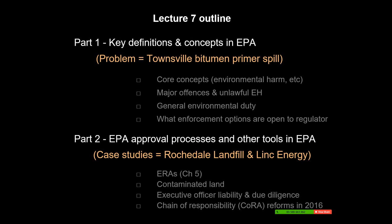Then in part two I want to move to looking at the approval processes and other tools under the Environmental Protection Act. The key concepts and environmental harm generally — those offences and concepts only occur when you don't have an approval. So they're really important general offences, but once you get into the act you find there's a range of activities that can be authorised, called environmentally relevant activities. They can be authorised under the Planning Act and the Development Assessment System, or for mining and petroleum activities as well.